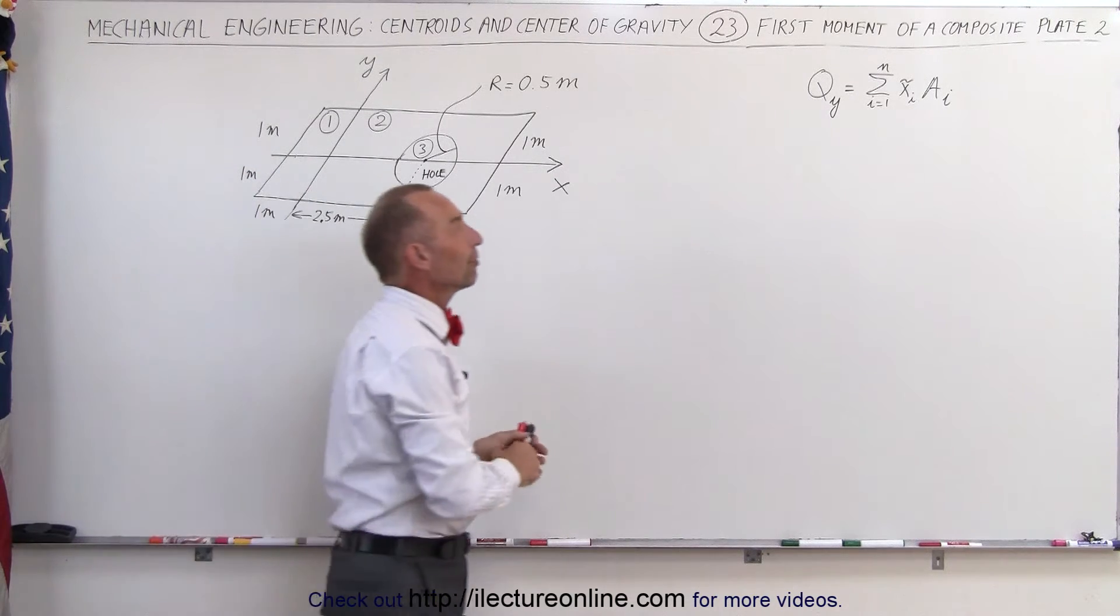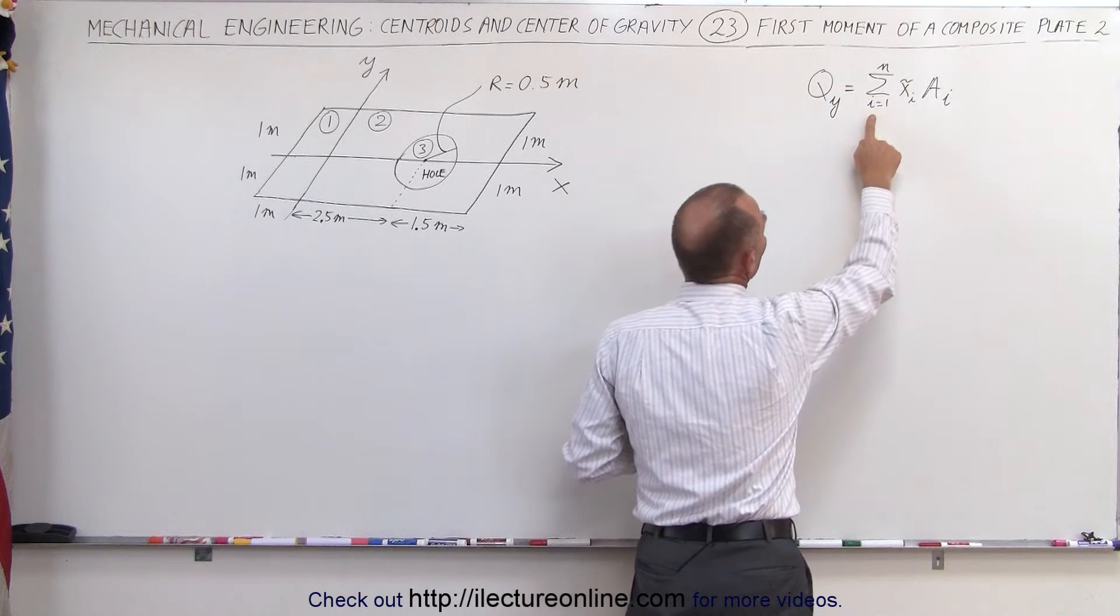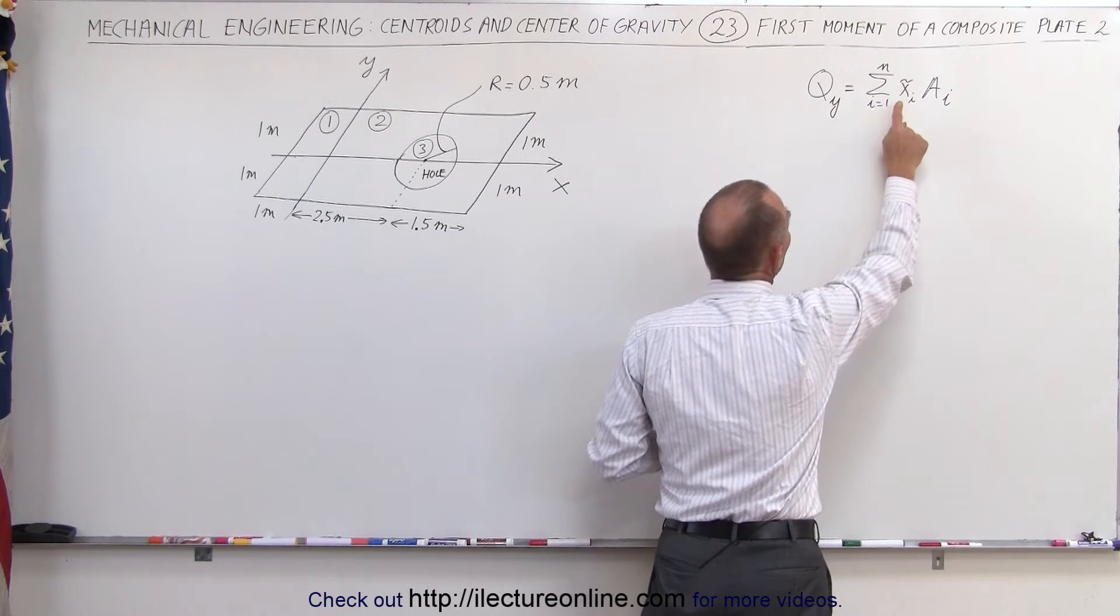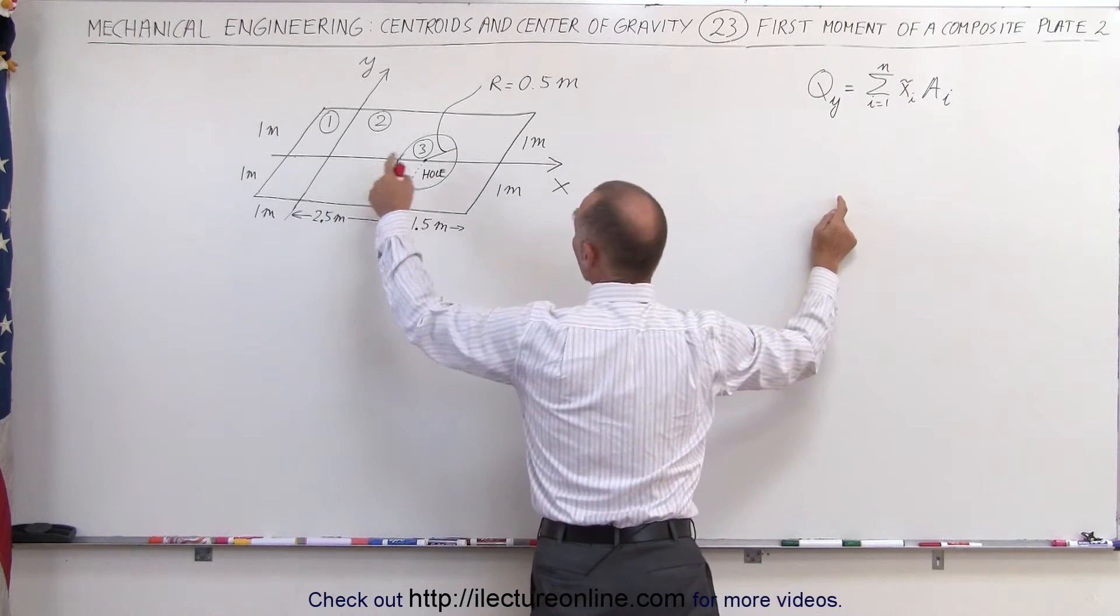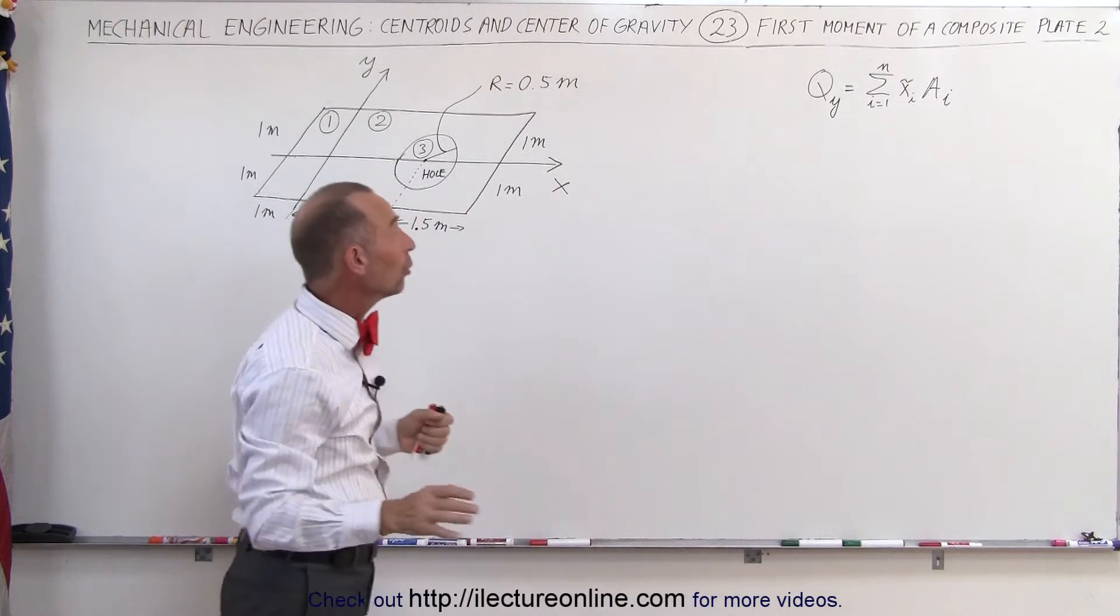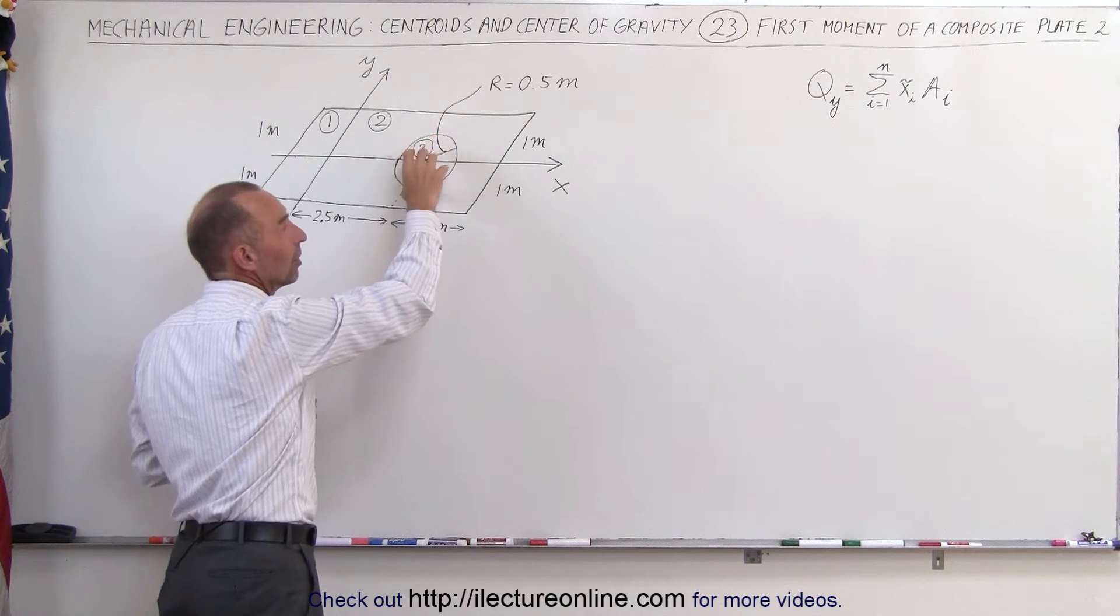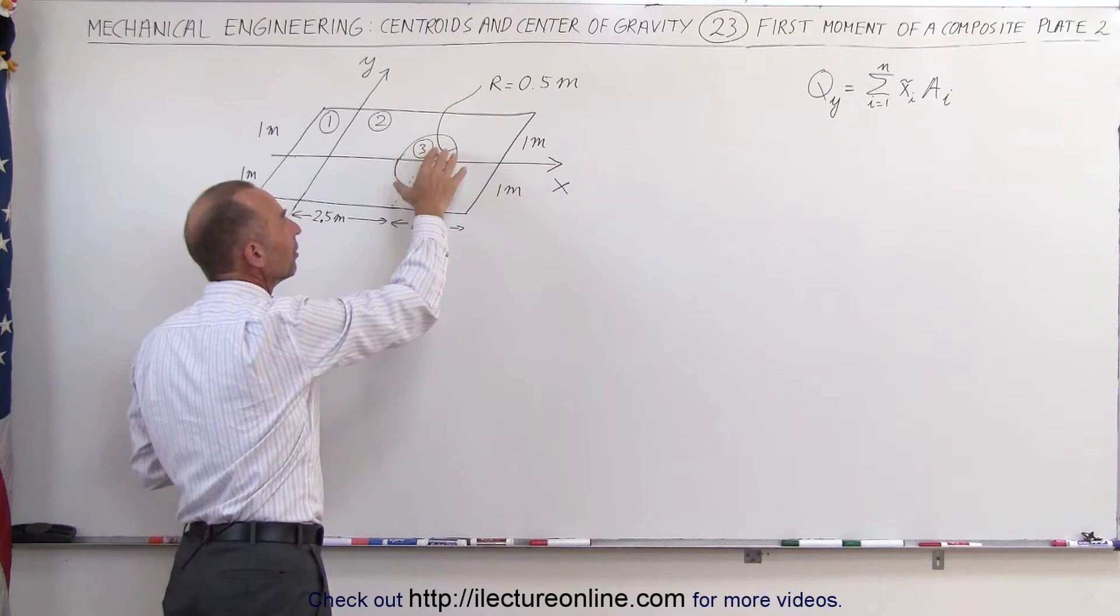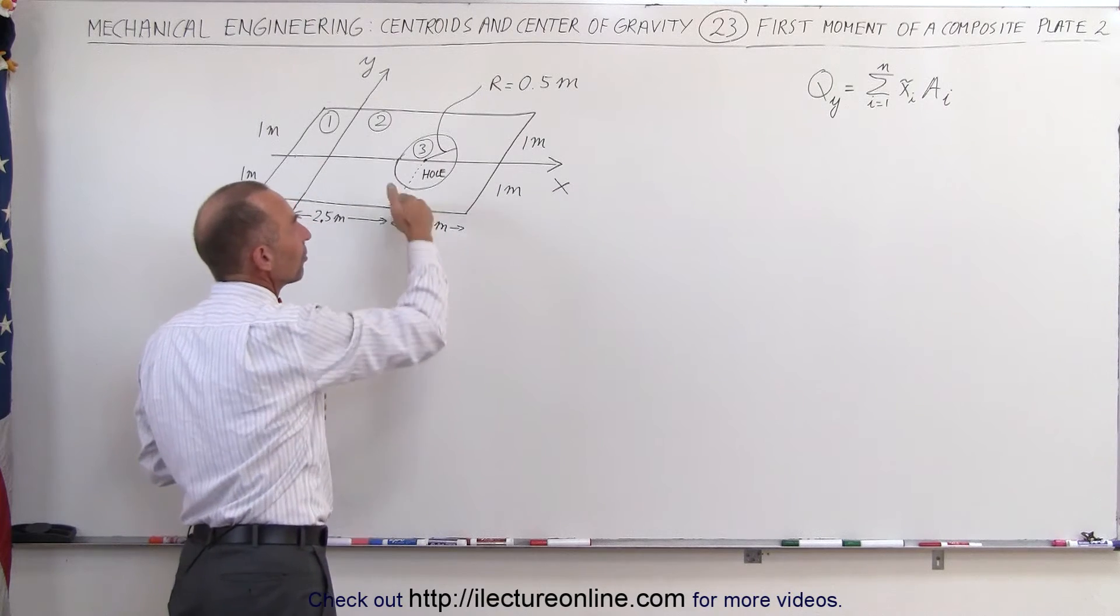The equation that we use to find the first moment about the y-axis is equal to the sum of the product of the x-coordinate of the center mass of each individual piece times the area of each individual piece. But notice when we have a hole we should subtract that mass or we should subtract that area from the total equation because it's missing.